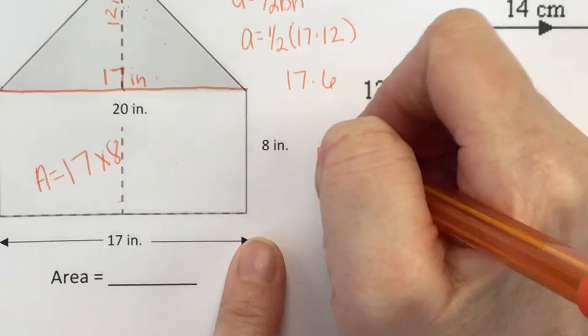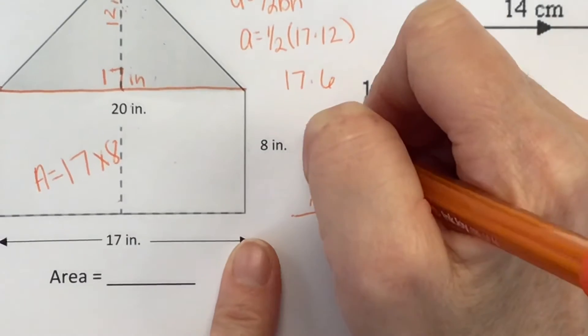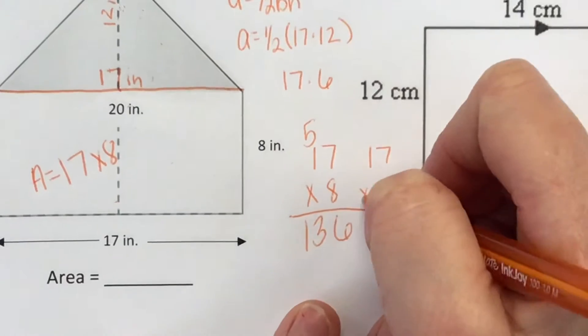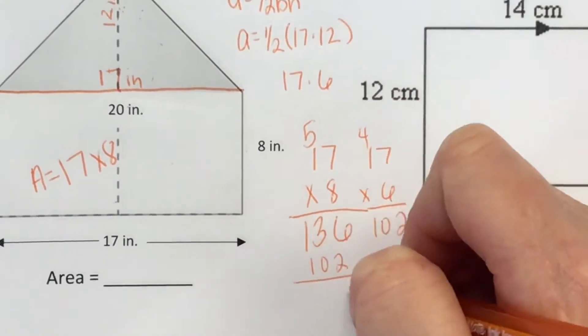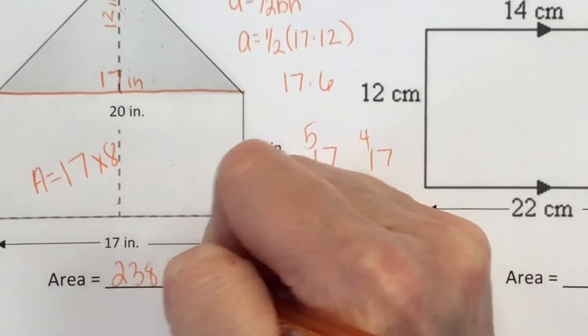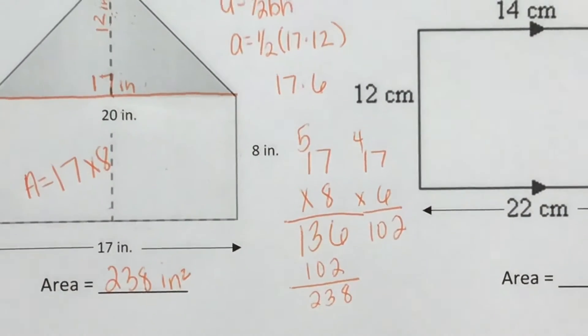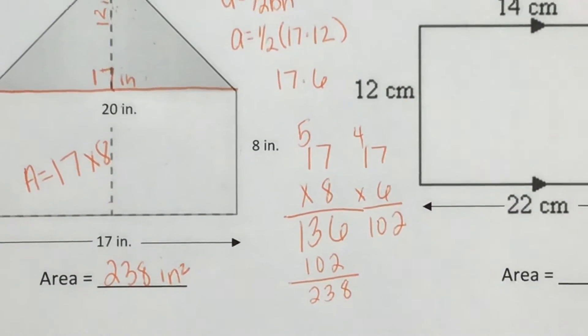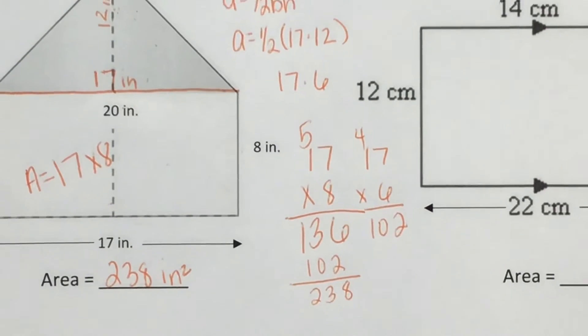What did you get? 17 times 8 is 136. 17 times 6 is 102. So if you add those two together, you get 238 square inches.